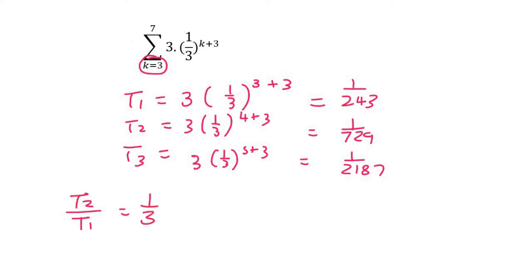If you've got a different answer to me, it's because you're typing it in on the calculator in a weird way. The Casio calculators can be a bit funny when you're dividing fractions, so just look out for that. But if we look at t3 divided by t2, it's also a third. So it's a geometric sequence, because the ratio is staying constant.